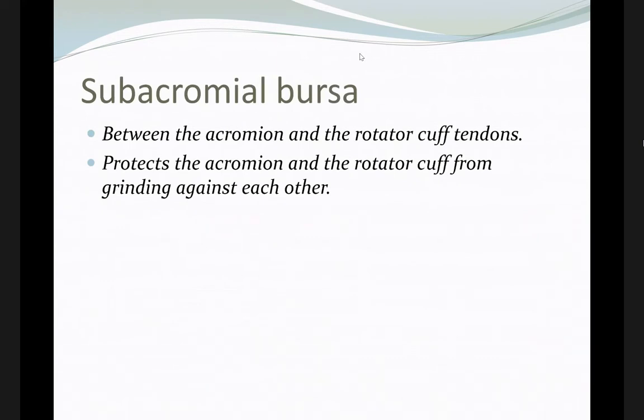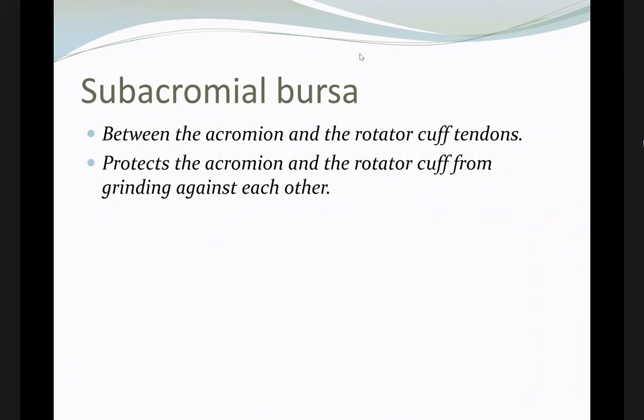The subacromion bursa is located in a canal between the acromion and the rotator cuff tendons. It functions like a capsule and allows for smooth motion of the rotator cuff tendons. If the acromion is of the hooked type, it might irritate the rotator cuff muscles. The main goal of the subacromion bursa is to allow smooth motion of the rotator cuff tendons.